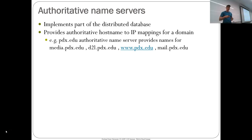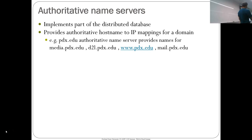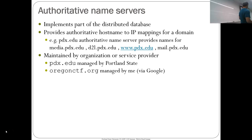The authoritative name servers implement the part of the distributed database that provides the actual IP address to name mapping for a domain. For example, the pdx.edu authoritative name server will issue names for things like media.pdx, d2l.pdx, www, and mail.pdx.edu. OIT manages our name server on campus and hands out the mapping. In the lab you can dig around to find the IP address doing all of this for Portland State.